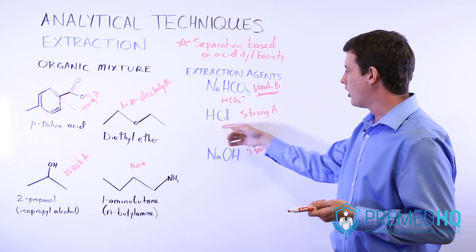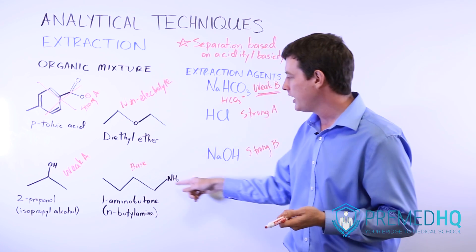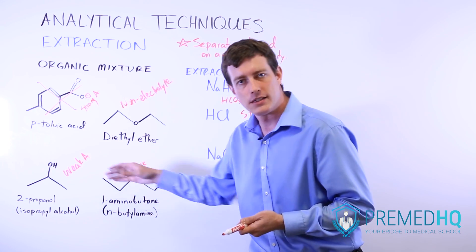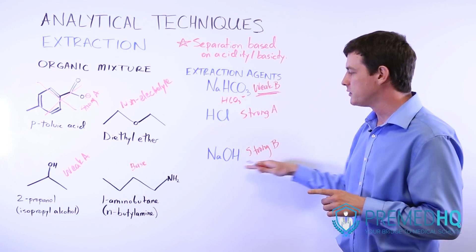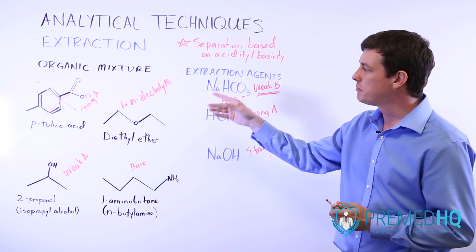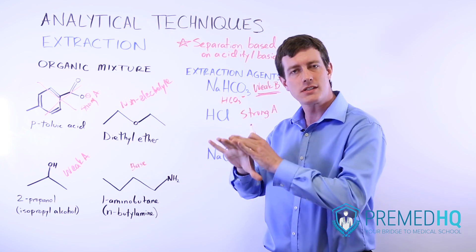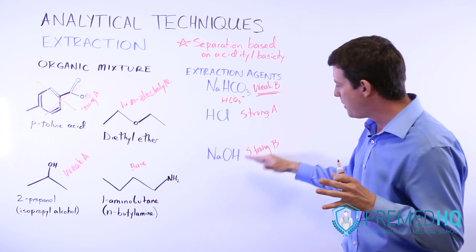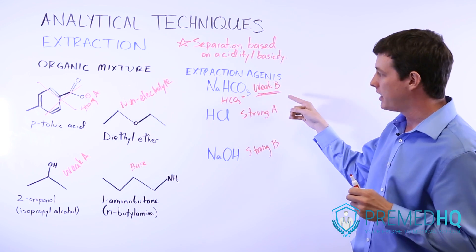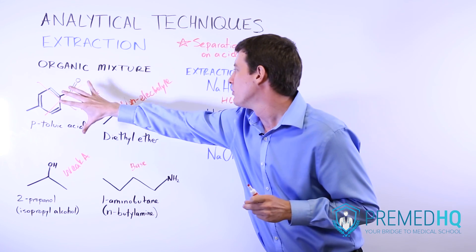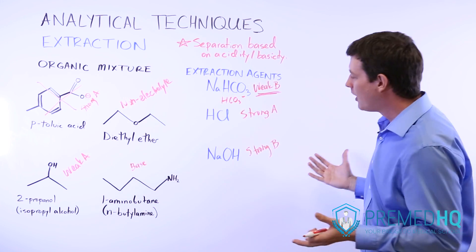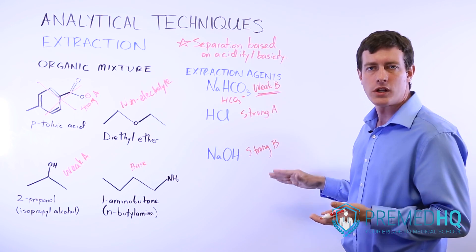Now we have two choices: use our strong acid to protonate the base, or use our strong base to deprotonate the weak acid. Why don't we use NaOH first? If we used NaOH first, it wouldn't distinguish between the strong acid or the weak acid — it would deprotonate all acidic species in our organic mixture. So we first went in with the weak base to separate only the strong organic acid and leave the isopropyl alcohol intact.